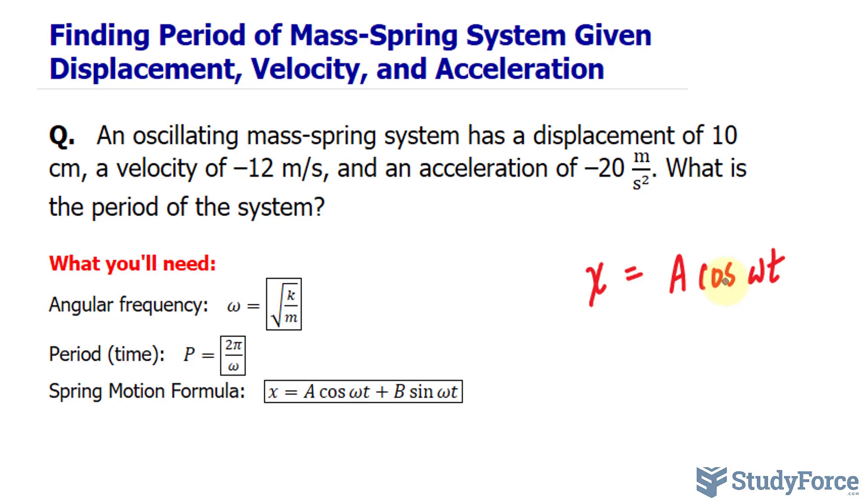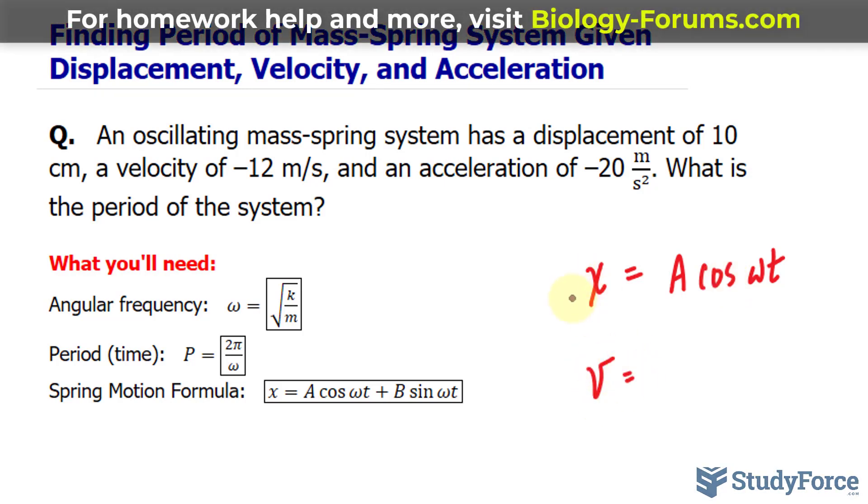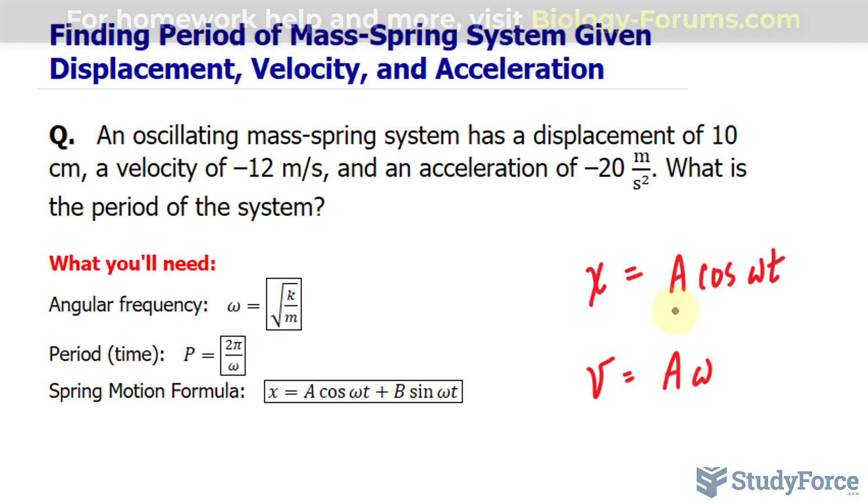The velocity function is found by taking the derivative of this displacement function. If we took the derivative of this equation, we would get v, or the derivative of x, is equal to A omega, and the derivative of cosine is negative sine. So I'll write down negative sine omega t. We can rearrange this so that the negative is at the front.